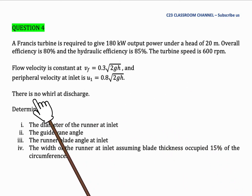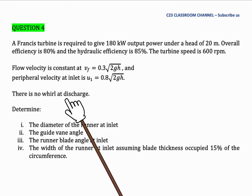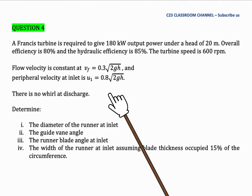There is no whirl velocity at discharge. Discharge here means the outlet. Then determine: the diameter of the runner at inlet, the guide vane angle, the runner blade angle at inlet, and the width of the runner at inlet assuming blade thickness occupies 15 percent of the circumference.